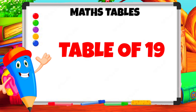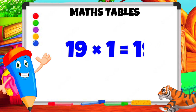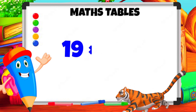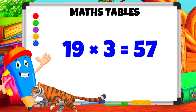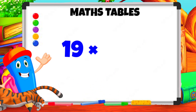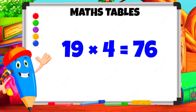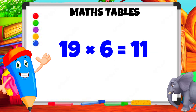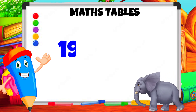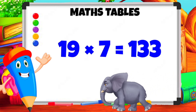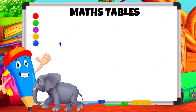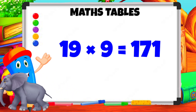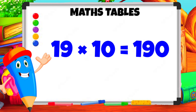Table of Nineteen. 19 1s are 19. 19 2s are 38. 19 3s are 57. 19 4s are 76. 19 5s are 95. 19 6s are 114. 19 7s are 133. 19 8s are 152. 19 9s are 171. 19 10s are 190.